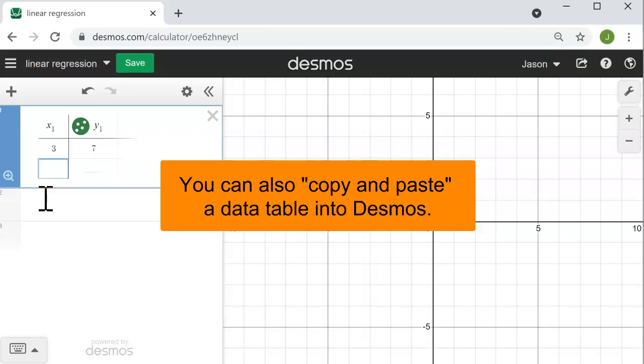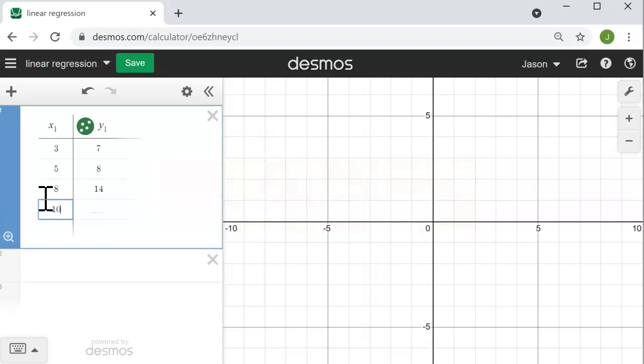The ones I'm going to use are 3 and 7, 5 and 8, 8 and 14, and finally 10 and 18.